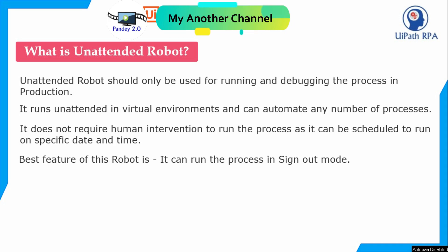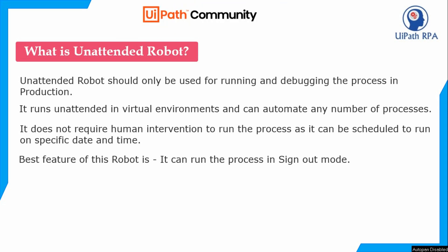Automatically, the unattended robot will log into your machine, start the job, execute the process, and then stop. It will then sign out your machine as well. Jobs can also be started or stopped from Orchestrator.